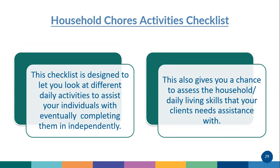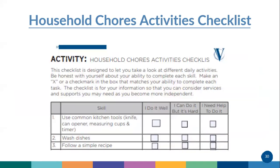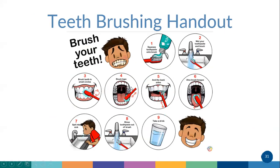Another handout is 2.7 — the household chores activity checklist. This is one of my favorites because it lets you look at many different daily activities you could potentially assist your client with doing independently. It also gives you a chance to assess what they need help with, what they can do independently, and what they can do with some support. For each skill — like 'I can use common kitchen tools: a knife, measuring cups, timers' — they can rate: I can do it well, I can do it but it's hard, I need support, I need a lot of help, or I can't do it. It's a great way to positively reinforce skills they already have while identifying areas to work on.